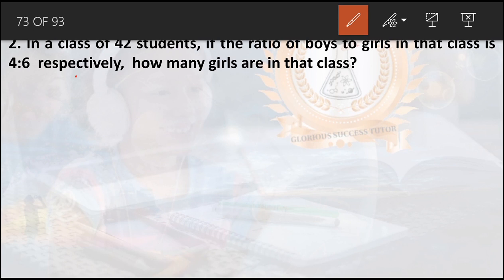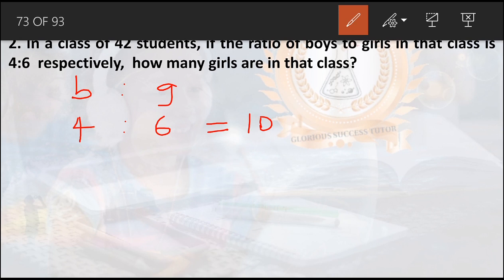Total number is 42. The ratio of boys to girls is four to six respectively, so boys B ratio girls G is four to six. The sum of the ratio is four plus six equals ten. To find boys: four over ten multiplied by 42.